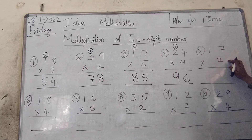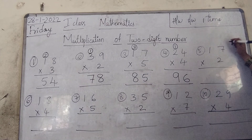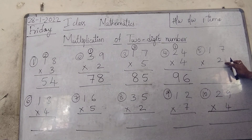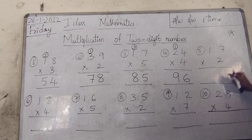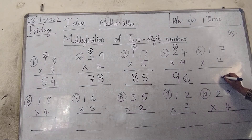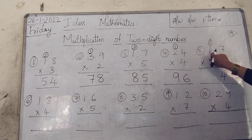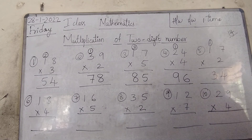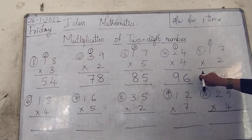Next: 17 into 2. Which table are we using? 2 table. Which number is in the 1st place? 7. And in the 10th place? 1. 2 sevens are 14. We write 4 in the 1st place and carry 1 to the 10th place. 2 ones are 2, plus 1 equals 3. We write the 2 digit number multiplication like this.